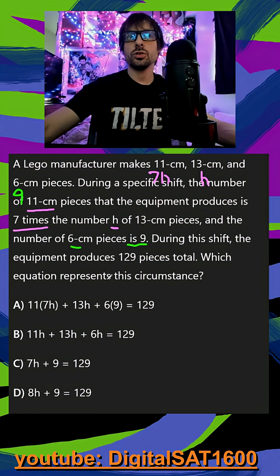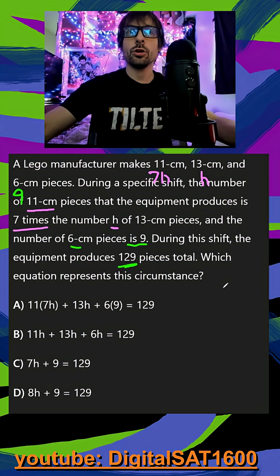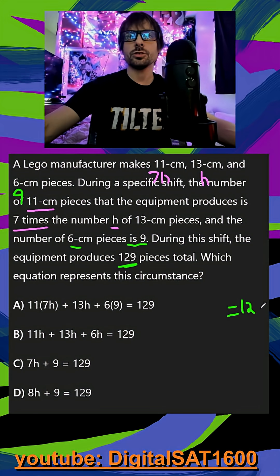During this shift, the equipment produces 129 pieces total. So I think we already have our equation. We know that it's equal to 129 because that's our total.